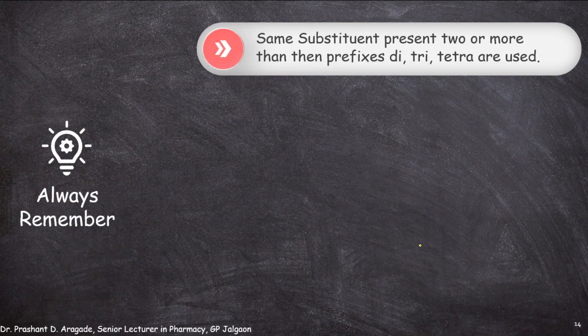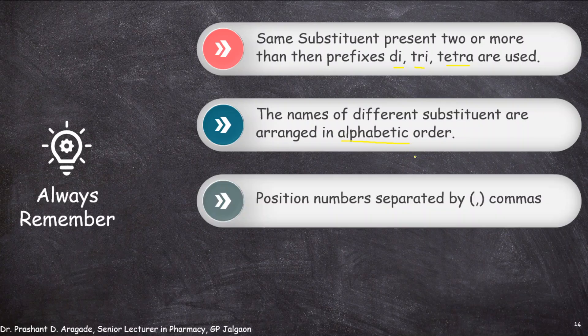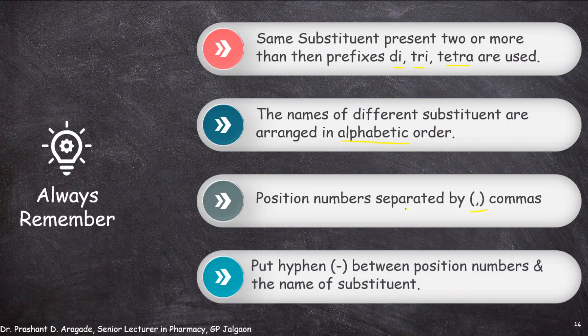Dear students, always remember: when the same substituents are present two or more times, use the prefix di, tri, or tetra depending on how many times that substituent appears. If different substituents are present, arrange them in alphabetical order. Always remember: position numbers are separated by commas, and you must put a hyphen between the position number and the name of the substituent. Follow these rules and you will never make mistakes in writing IUPAC nomenclatures.